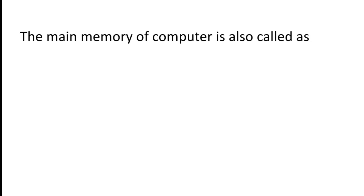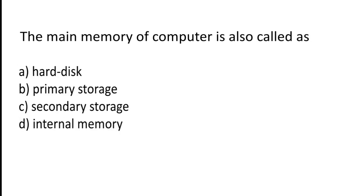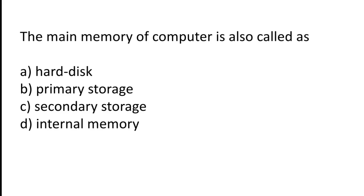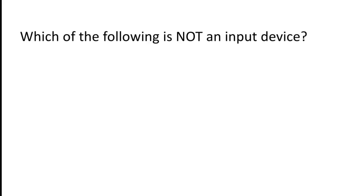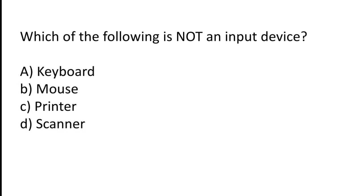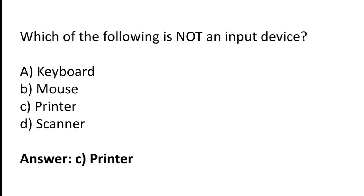The main memory of a computer is also called as: Primary storage, Secondary storage, Internal memory. Which of the following is not an input device? Keyboard, Mouse, Frontier, Scanner. The correct answer is option C — Frontier is not an input device.